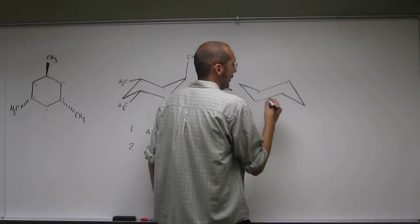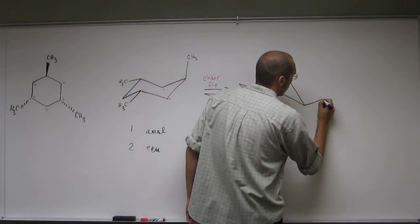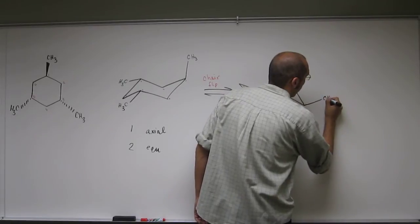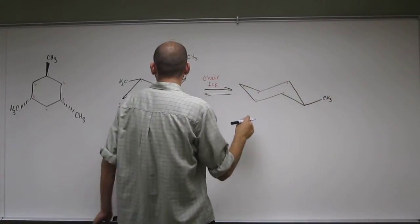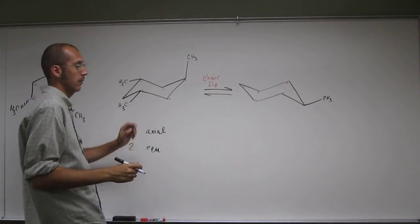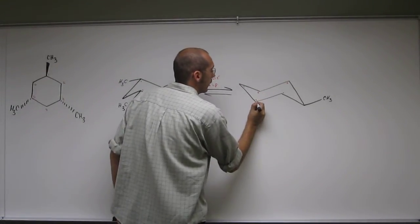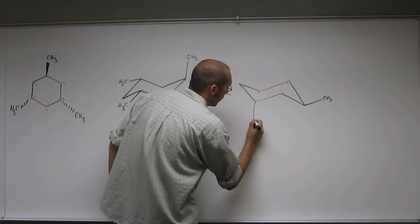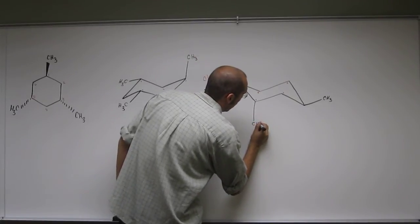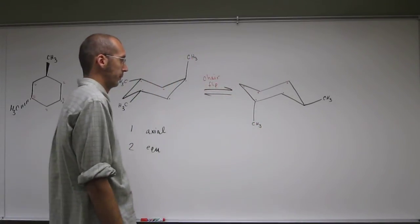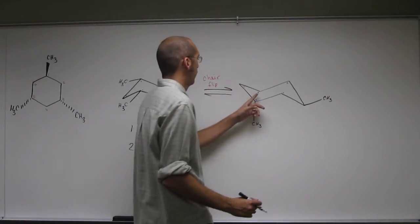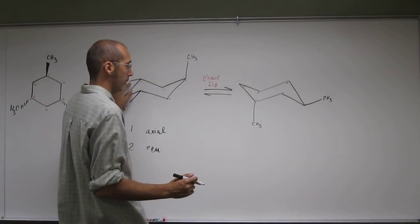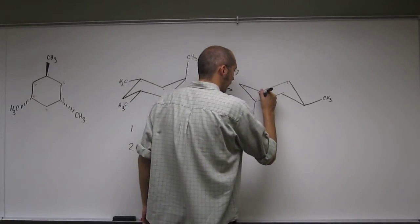So here we've got the axial. This one's going to be equatorial, like that. Methyl, 2, 3. Remember axial to equatorial. This one's equatorial, so it's going to go to axial. Axial on the bottom is down. Like that. Long bond. And then 4, 5. So equatorial up here. Axial here.